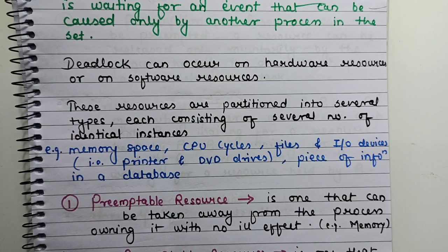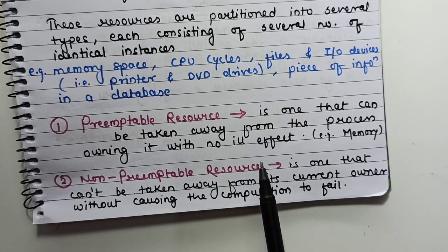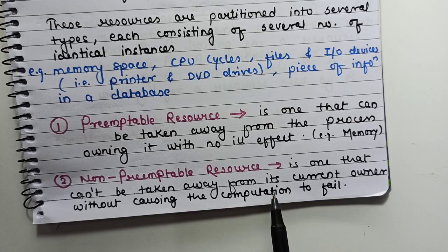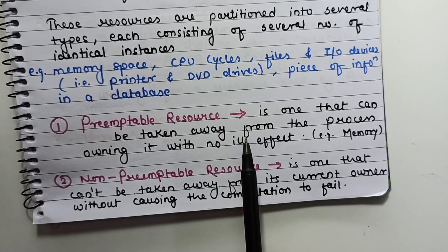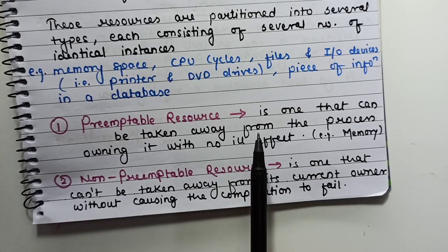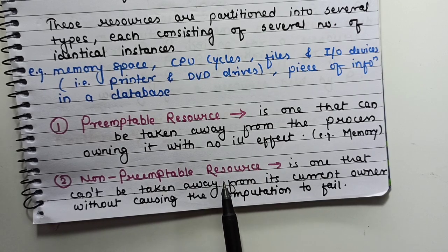We divide these resources into two types: preemptible resources and non-preemptible resources. Preemptible resources are ones that can be taken away from the process without affecting it. We can take away that resource from that process. Whereas, non-preemptible resources are ones that can't be taken away from its current owner. Preemptible resources are like memory. If we have limited RAM, we swap out some processes, then swap in others. This memory space is a preemptible resource. Whereas printer, CD writer, and DVD writer are non-preemptible resources.